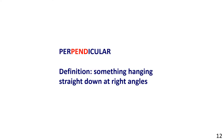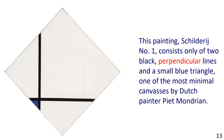Next, Perpendicular. Definition: something hanging straight down at right angles. Example: This painting, Schilderidge No. 1, consists only of two black perpendicular lines and a small blue triangle — one of the most minimal canvases by Dutch painter Piet Mondrian.